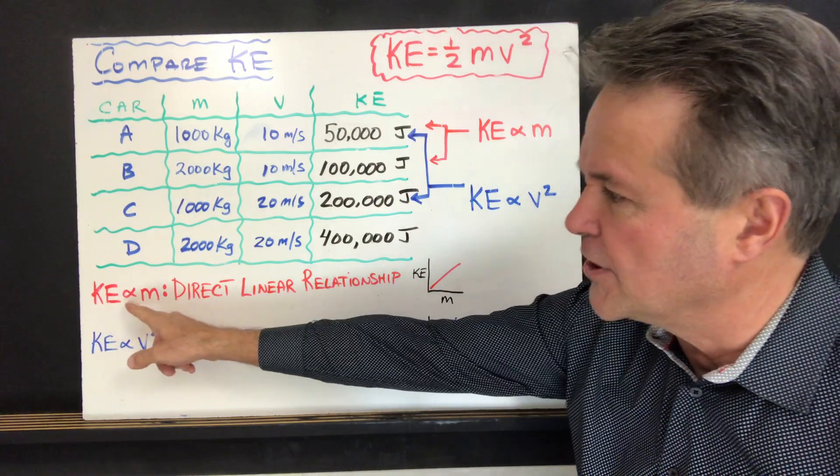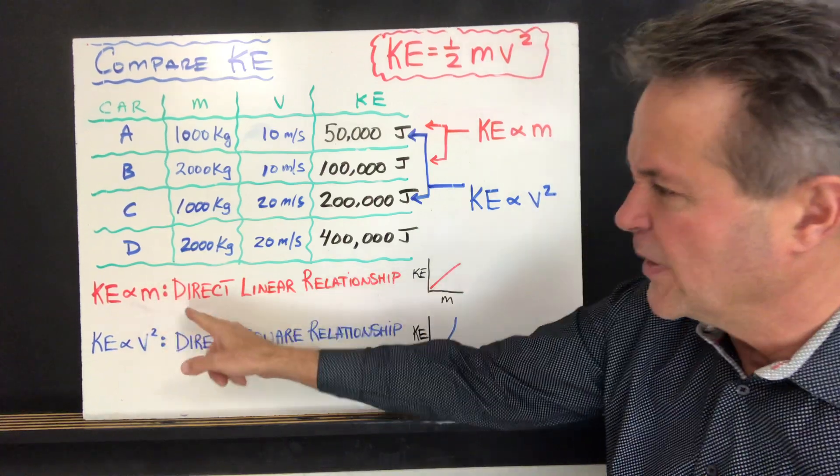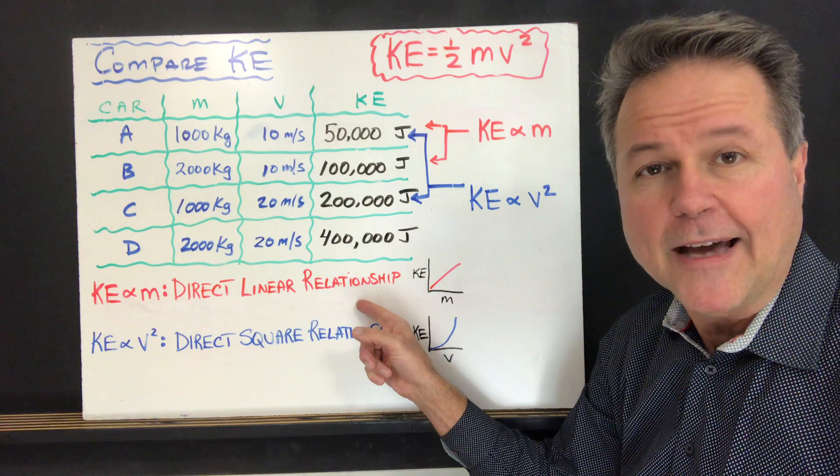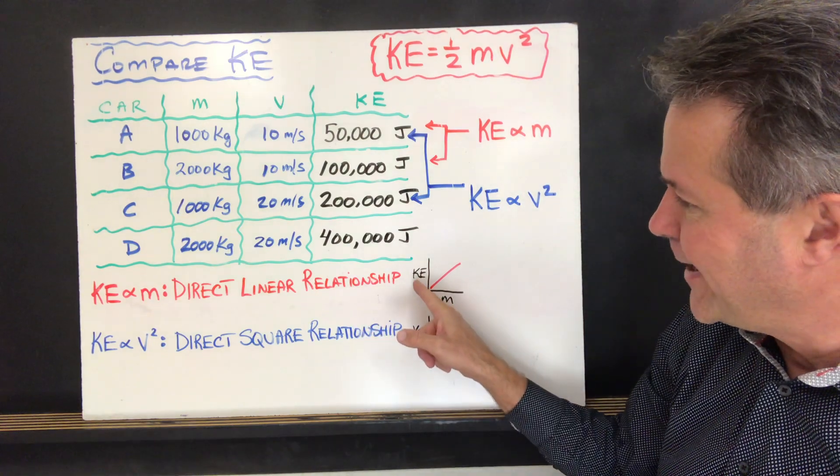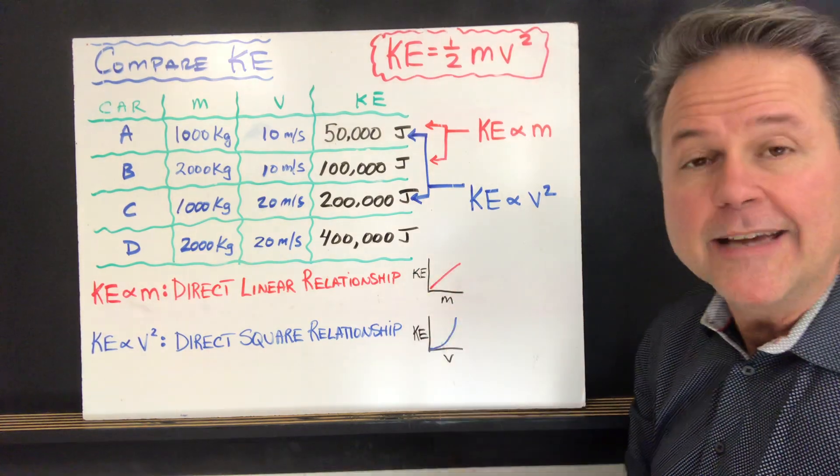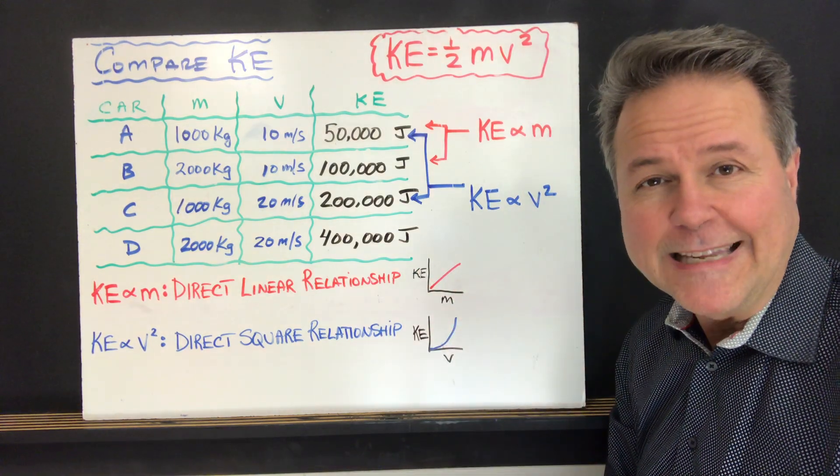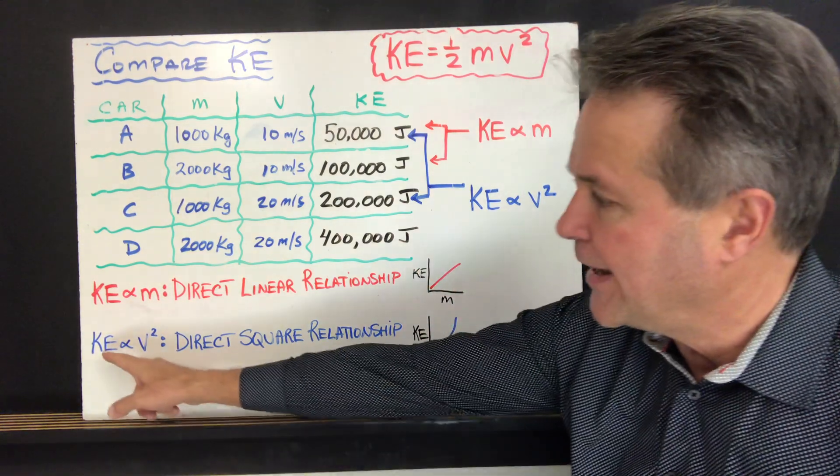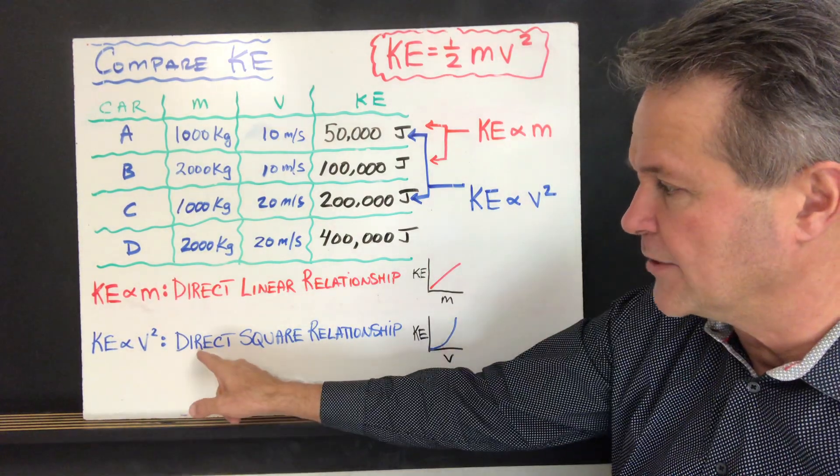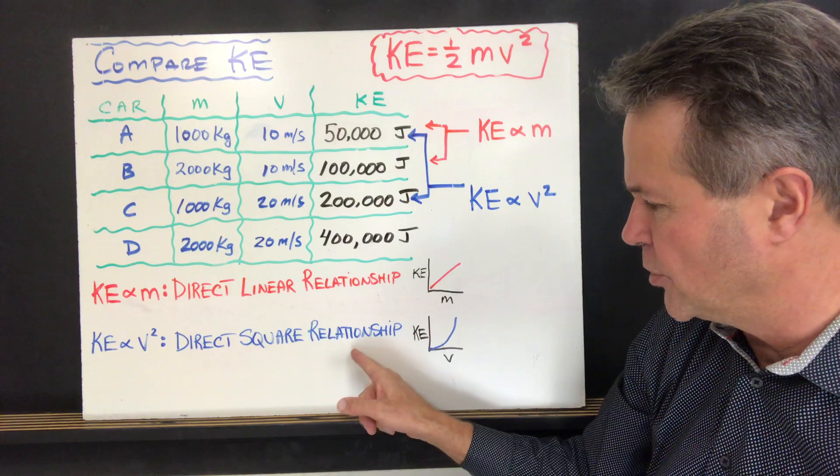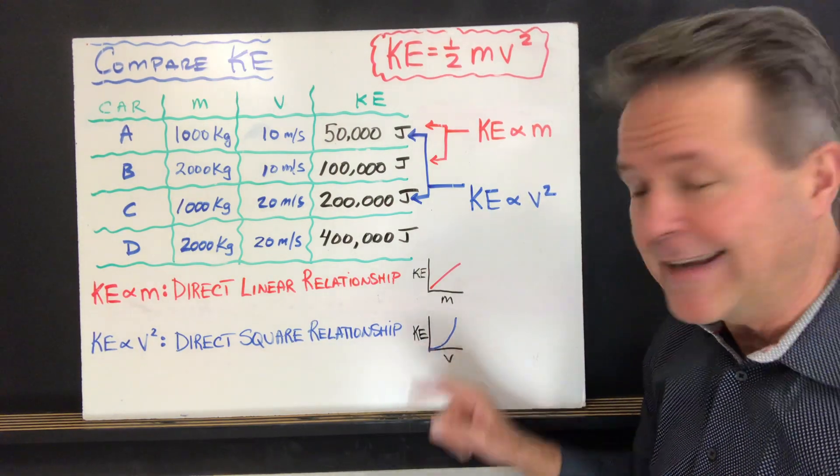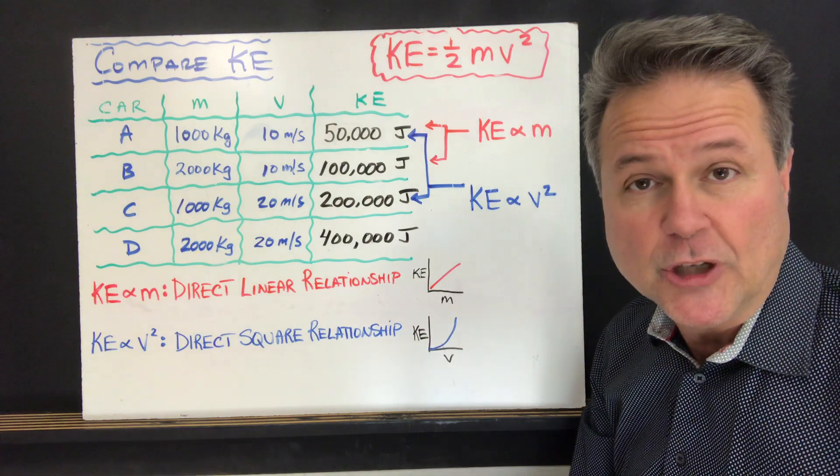So in summary, kinetic energy is proportional to M. We call that a direct linear relationship. And if we were to graph that, we would get a straight line, KE versus M. As you increase M, KE increases according to a linear fashion. Now KE and velocity, well that's a square relationship, and we call that direct square relationship. And that means if you increase the velocity, the kinetic energy is going to increase exponentially.